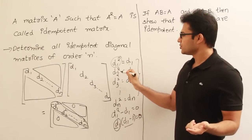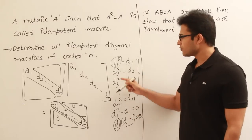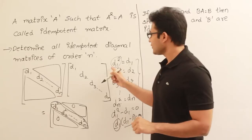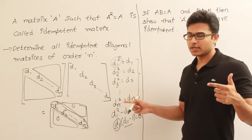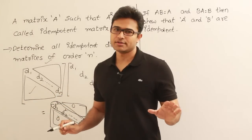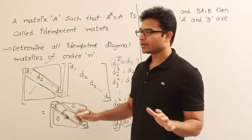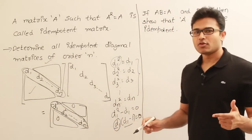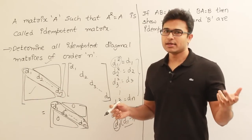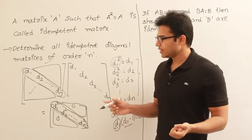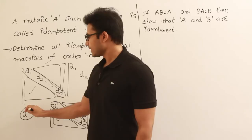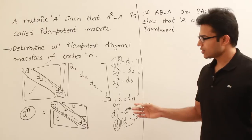So D1 equals 0 or 1, D2 equals 0 or 1, D3 equals 0 or 1, and Dn equals 0 or 1. We have N numbers and each can take either 0 or 1. The elements above and below the diagonal are all zeros with no variation. Each element in the principal diagonal can independently be 0 or 1. When we have N blanks each fillable with 0 or 1, the number of combinations is 2 to the power N. Therefore we get 2^N matrices which are diagonal and idempotent.